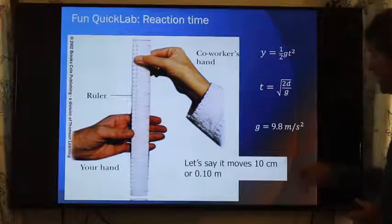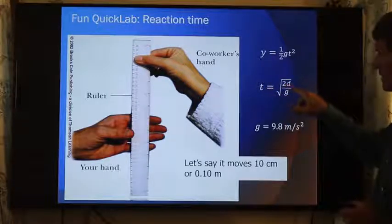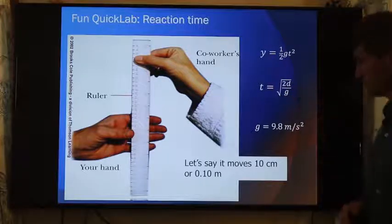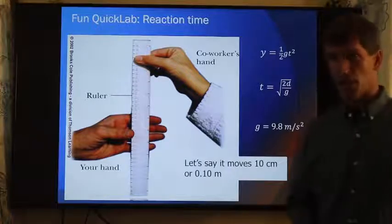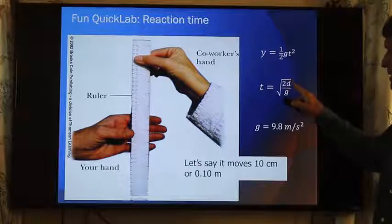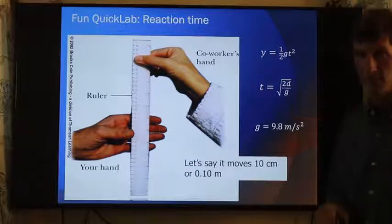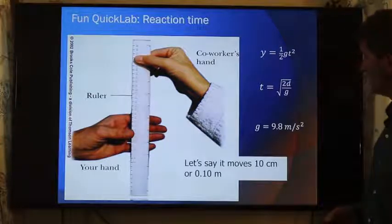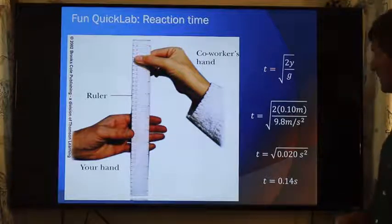Using the kinematic equations, we know it will travel a distance y of one-half the acceleration times time squared. The time it takes to fall is equal to your reaction time, which will be the square root of twice the distance divided by gravity. If it only moves ten centimeters when it's being dropped, we plug ten centimeters in here. Two times ten is equal to twenty. Twenty divided by ten gives me two. That would give you a reaction time of .14 seconds.